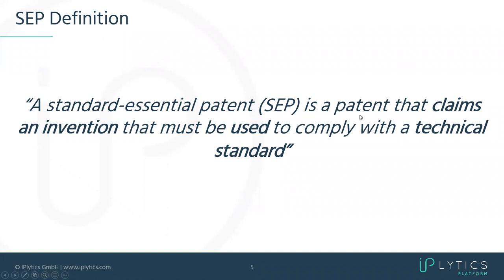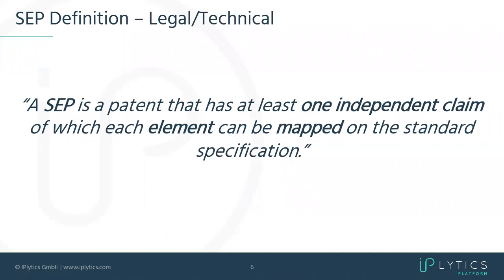A patent attorney would phrase it differently: an SEP is a patent that has at least one independent claim of which each element can be mapped to the standard specification. Patent attorneys typically have an engineering background in telecommunications and legal training, so they can actually read patents. What matters legally are only the claims, where the invention is specifically defined. We need just one claim describing a technology or method whose elements can be mapped to a standard specification.